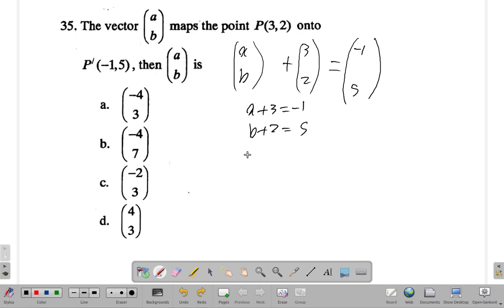So a+3 is -1. Subtract 3 from both sides, -3, -3, 3-3 leaves a only, get rid of 3. -1 minus 3 is -4. a is -4. Already you can get rid of c and d, those wouldn't work out here.